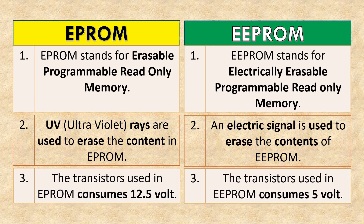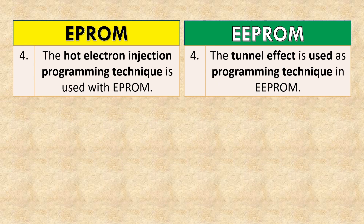The transistors used in EPROM consume 12.5V, while those in EEPROM consume 5V. The hot electron injection programming technique is used with EPROM, whereas the tunnel effect is used as the programming technique in EEPROM.